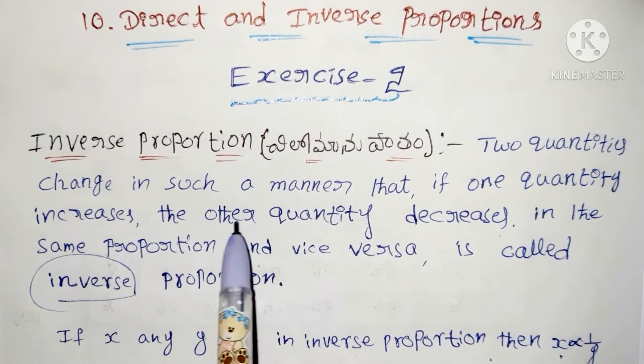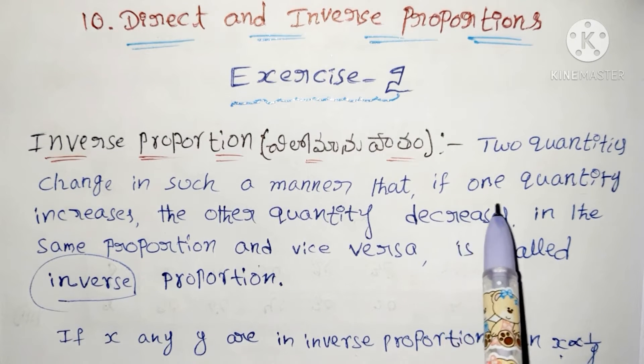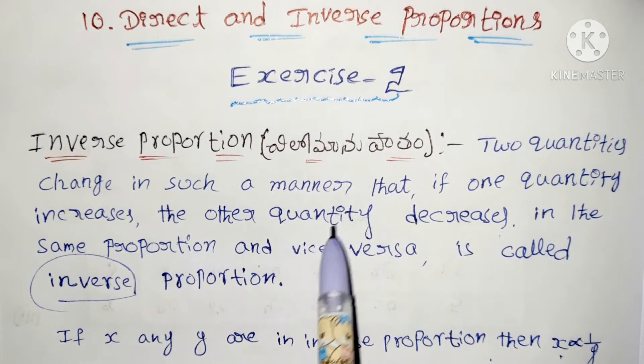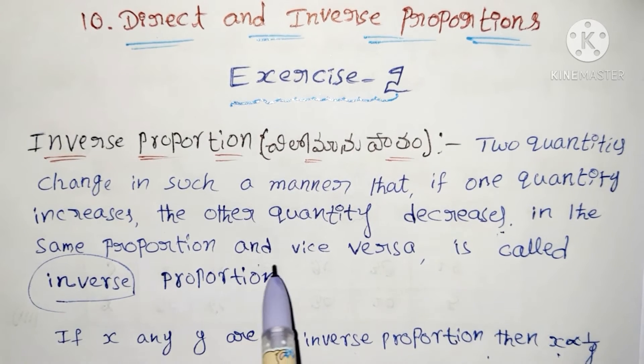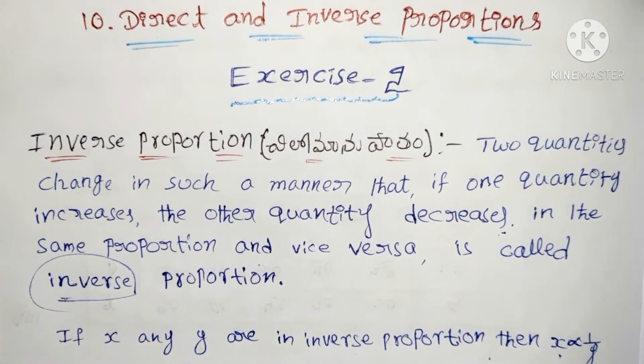Two quantities change in such a manner that if one quantity increases, the other quantity decreases in the same proportion, and vice versa. This is called inverse proportion.